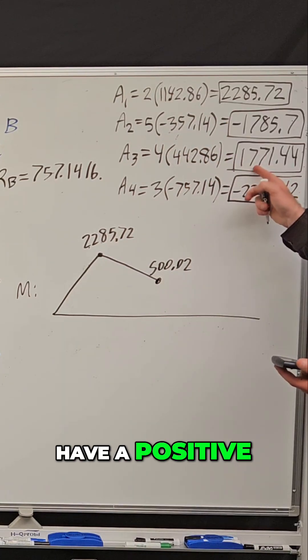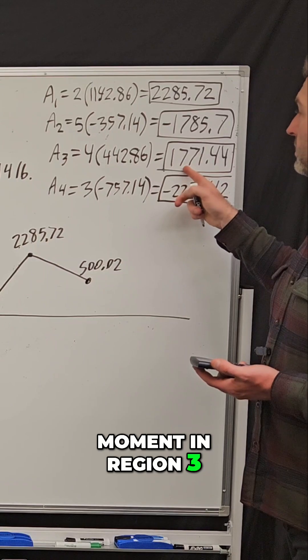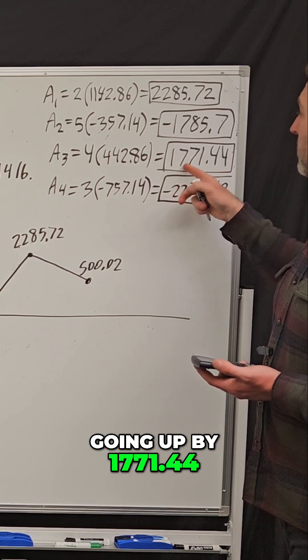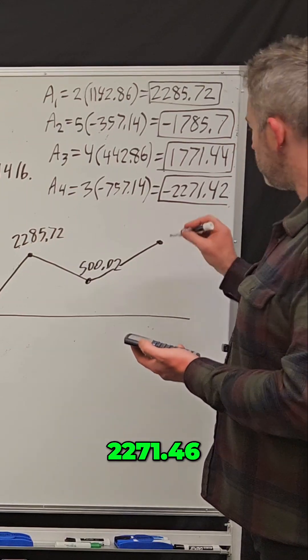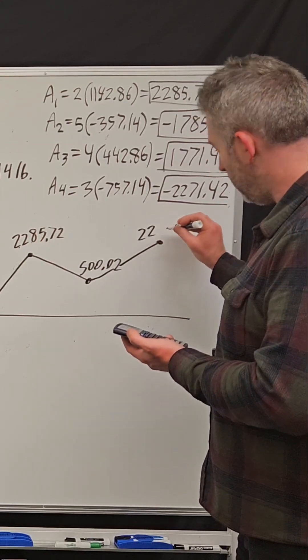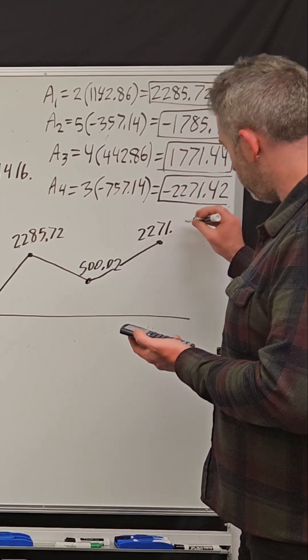But then we have a positive moment in region three. So it's going to start going up by 1771.44 until it reaches 2271.46.